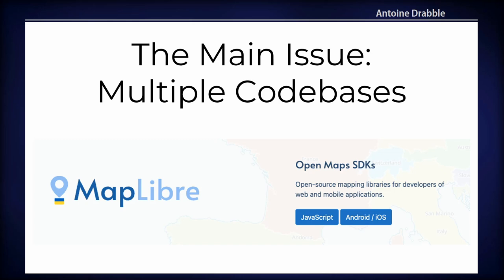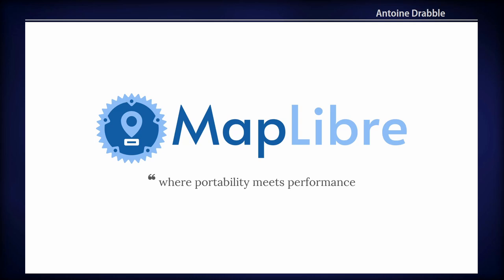The main issue is that companies or communities like MapLibre have to maintain different code bases. This is a big problem because it's almost double the work — you need two teams doing development who must collaborate, making it more costly and reducing the ability to innovate. Now Max will present MapLibre RS, the map renderer written in Rust.